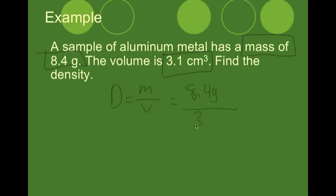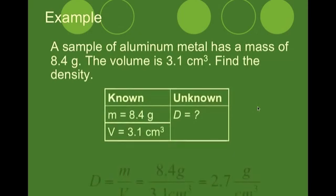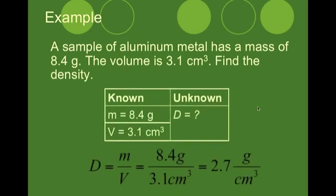So therefore, we'll have 8.4 grams all divided by 3.1 cubic centimeters. And if we plug that into a calculator, we should get somewhere right around 2.7 grams per cubic centimeters. Here's what's written very nice and neat.